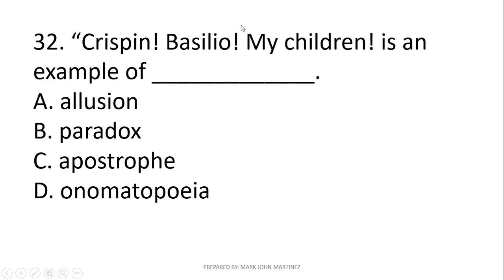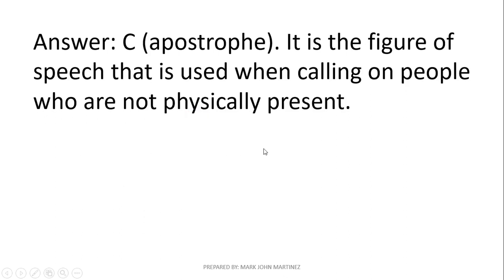Next: 'Crispin, Basilio, my children' — is this an example of allusion, paradox, apostrophe, or onomatopoeia? The answer is apostrophe. Apostrophe is used when someone calls out or addresses people or someone who is not physically present in the scene.